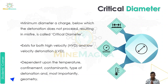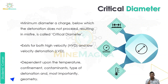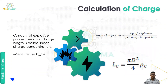So critical diameter exists in both high velocity detonation (HVD) and low velocity detonation (LVD). It is dependent upon temperature, confinement, contaminants, type of detonation, and most importantly, geometry. Critical diameter depends on these different factors — temperature, confinement, contaminants, type of detonation, and geometry. Considering all these factors, we set our critical diameter.